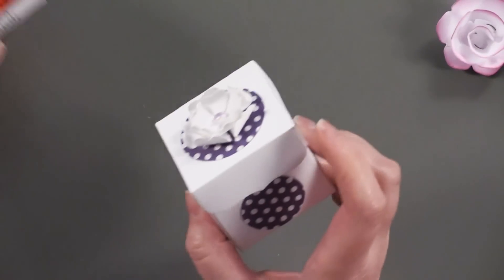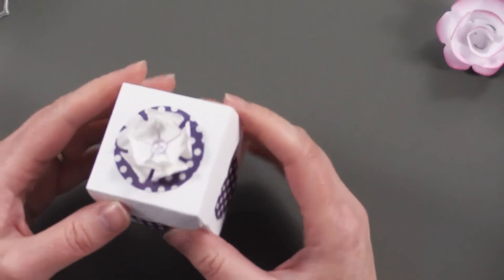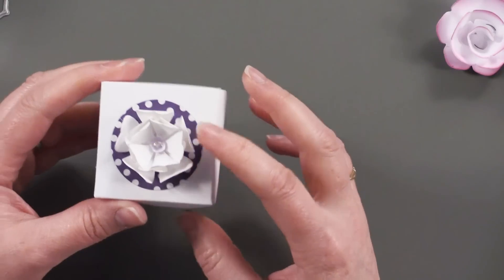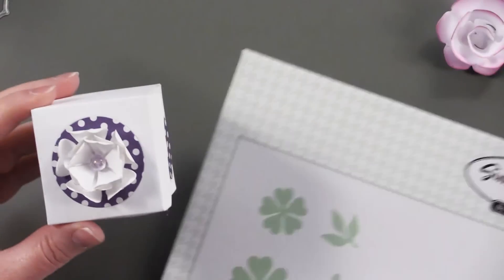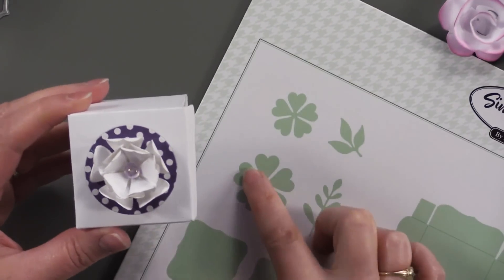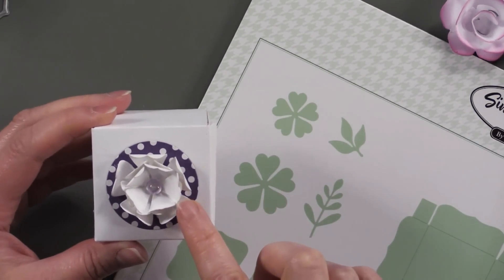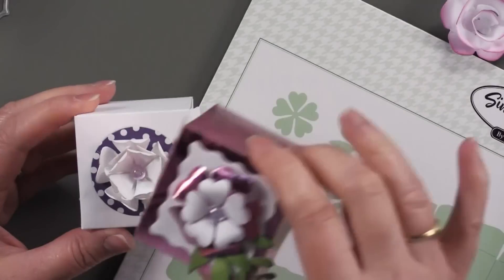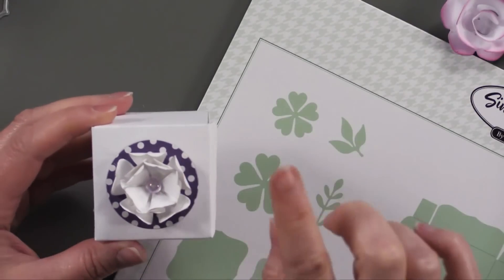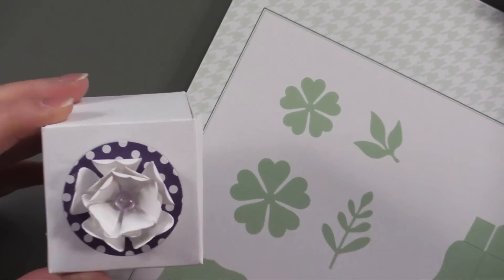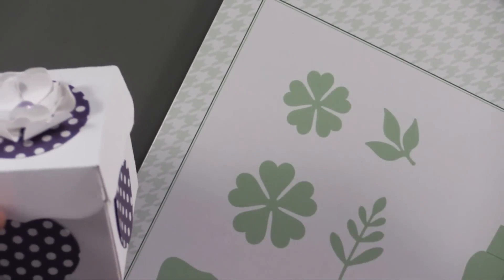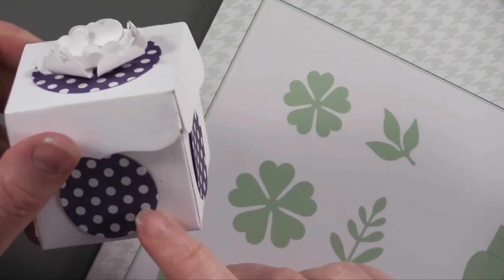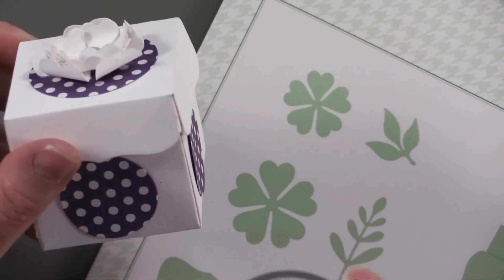And then for a fun birthday party favor, the same idea, I used the flower that came with the box die. This flower right here, and just layered those. But instead of curling them under, like on this box, I curled them up. And then also went ahead and put a sparklet there.